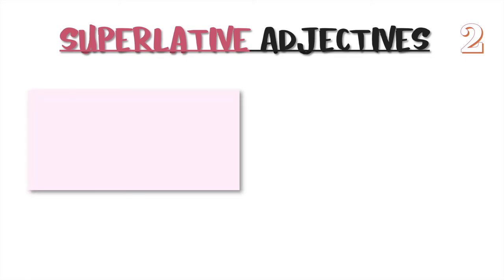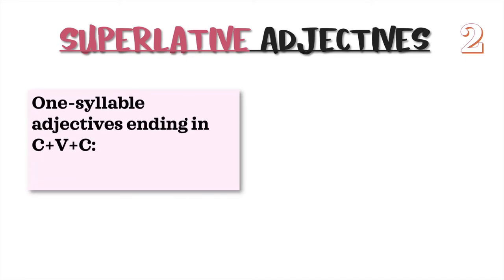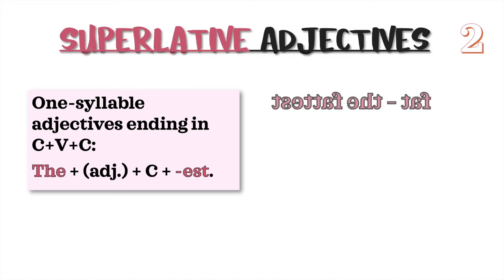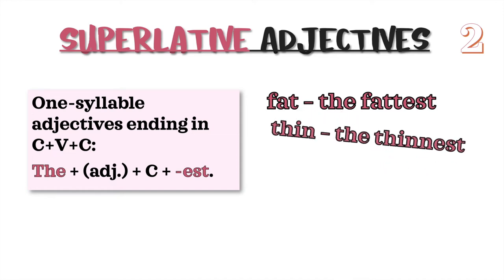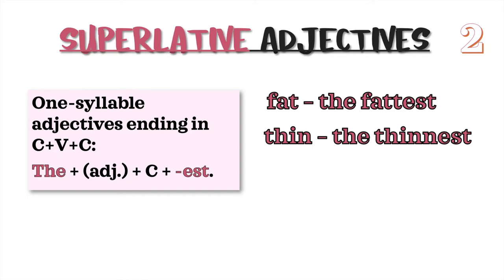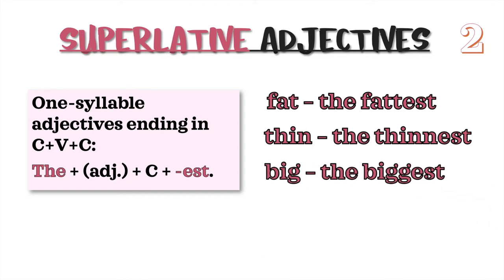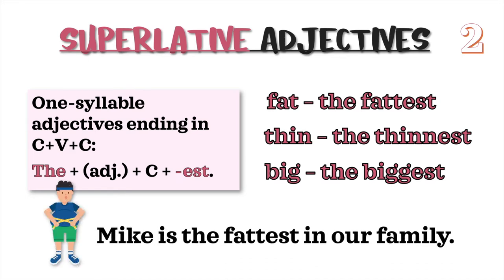Superlative Rule 2: One syllable adjectives ending in consonant-vowel-consonant. We add the, plus the adjective, plus another consonant (the same last consonant), then -est. For example: fat → the fattest (double t); thin → the thinnest (double n); big → the biggest. Example sentence: Mike is the fattest in our family.